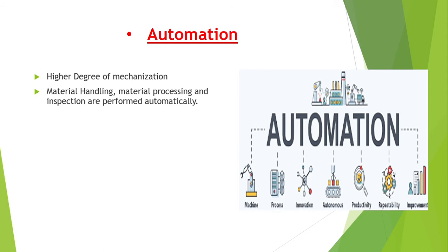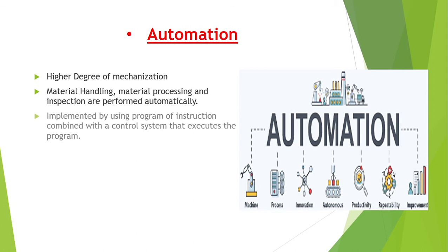Automation can be defined as a technology concerned with the application of mechanical, electronic, and computer-based systems to operate and control the production. Automation is the creation and application of technology to monitor and control the production and delivery of products and services.